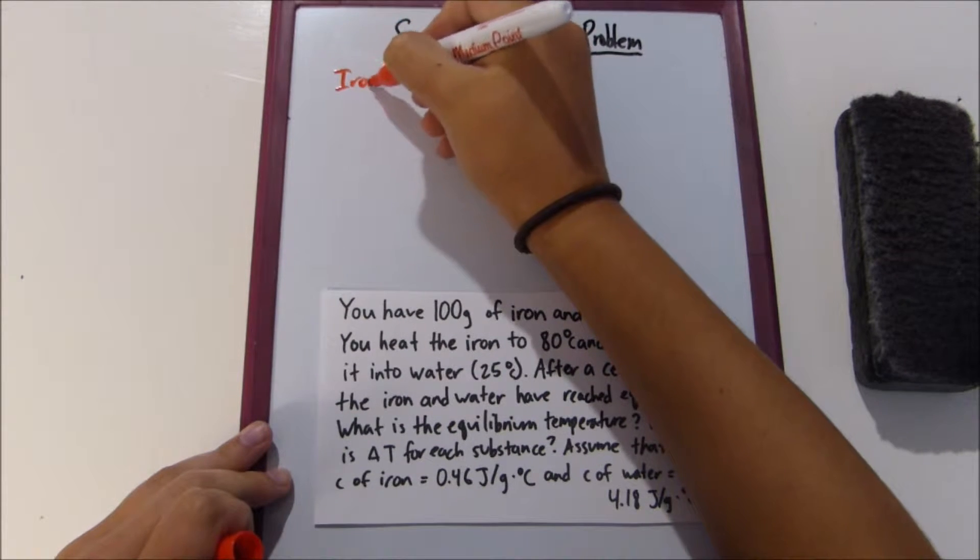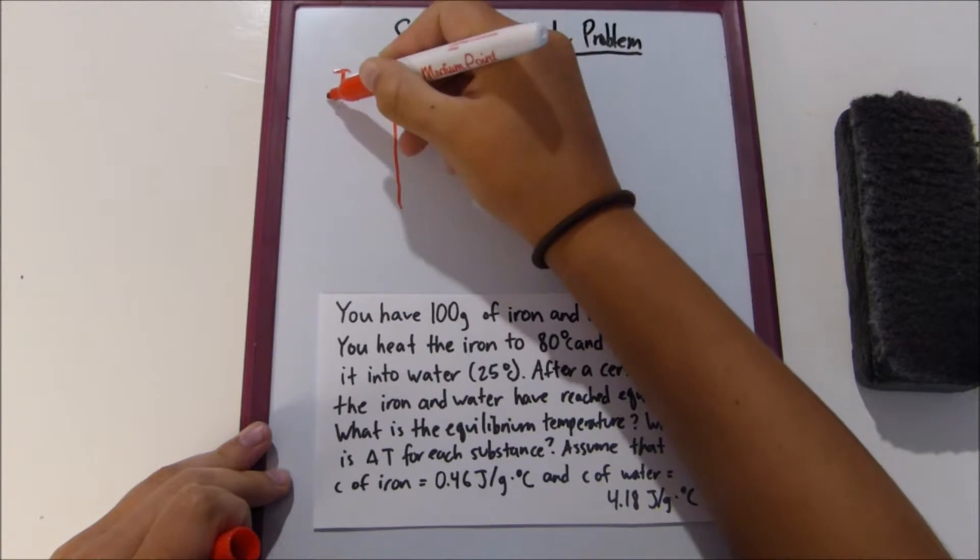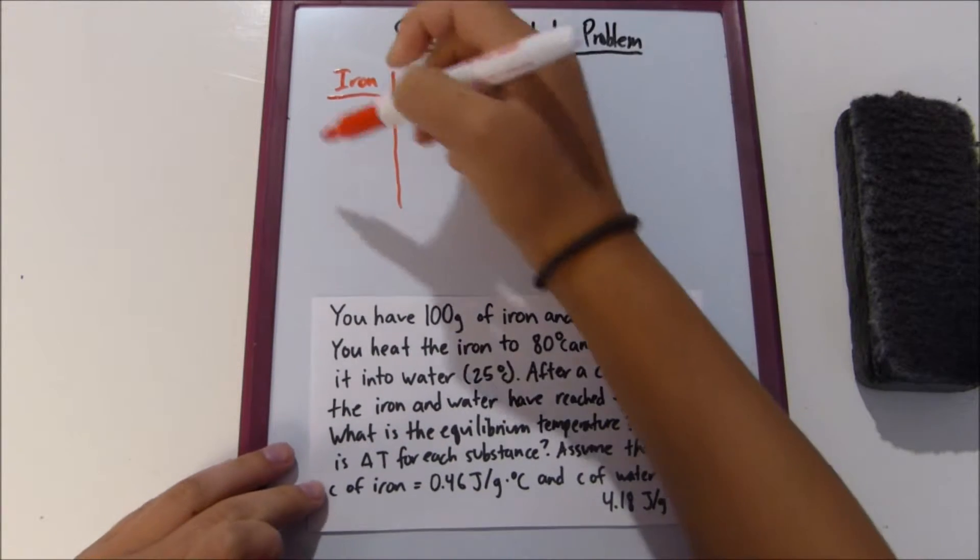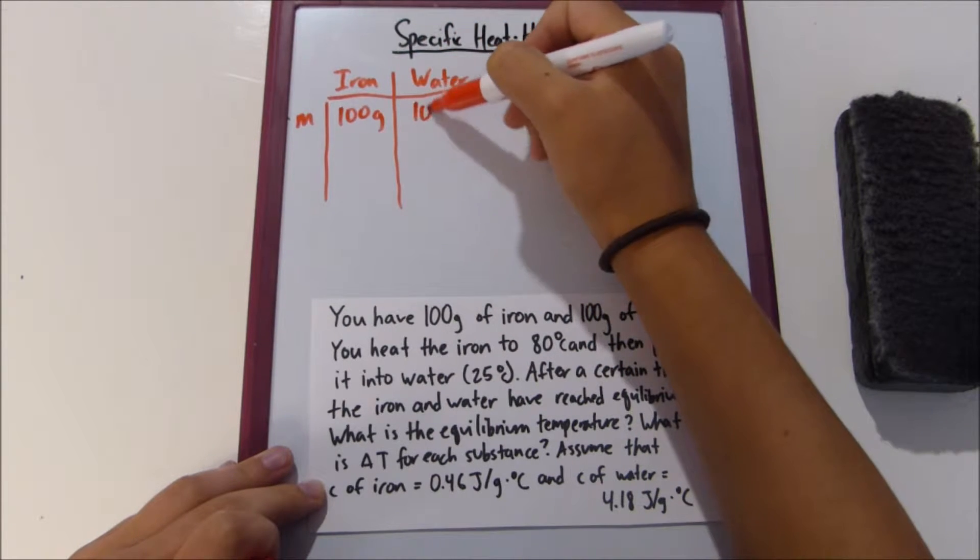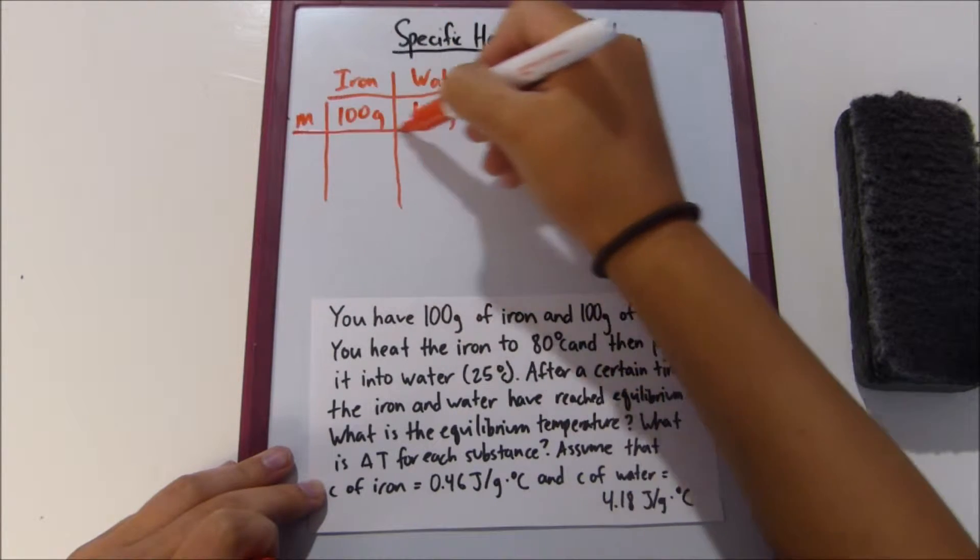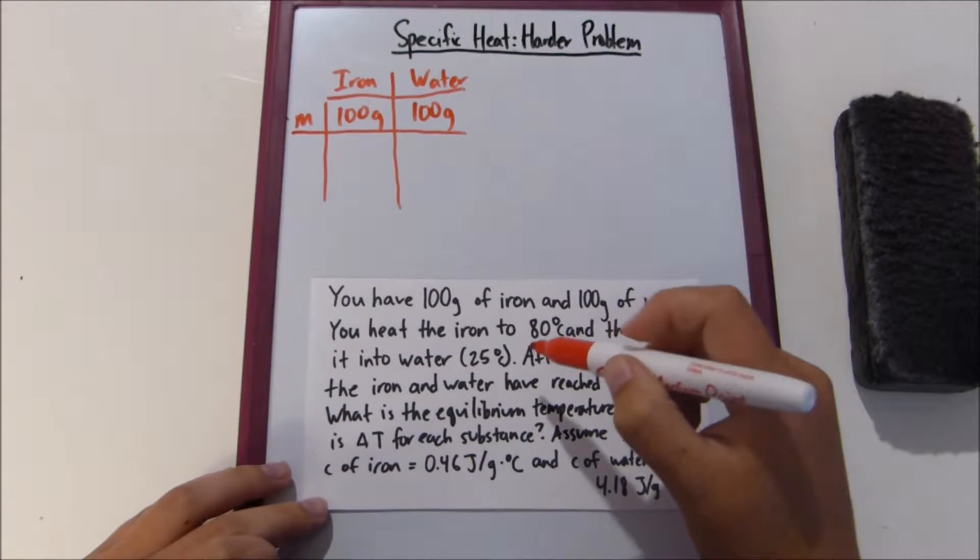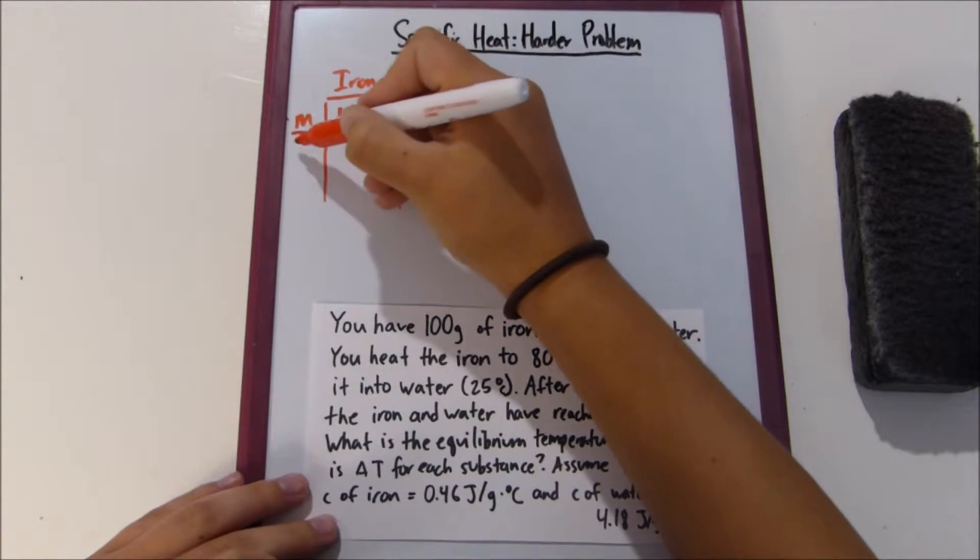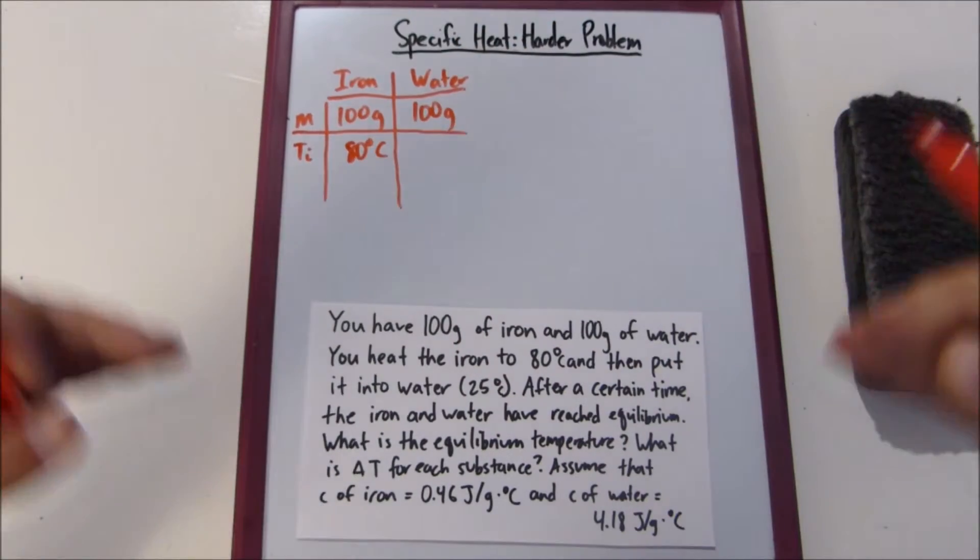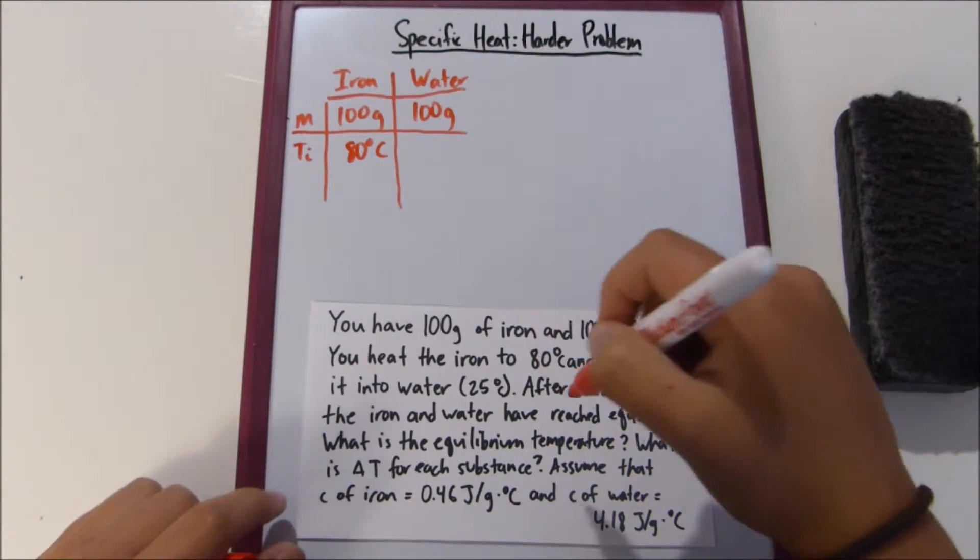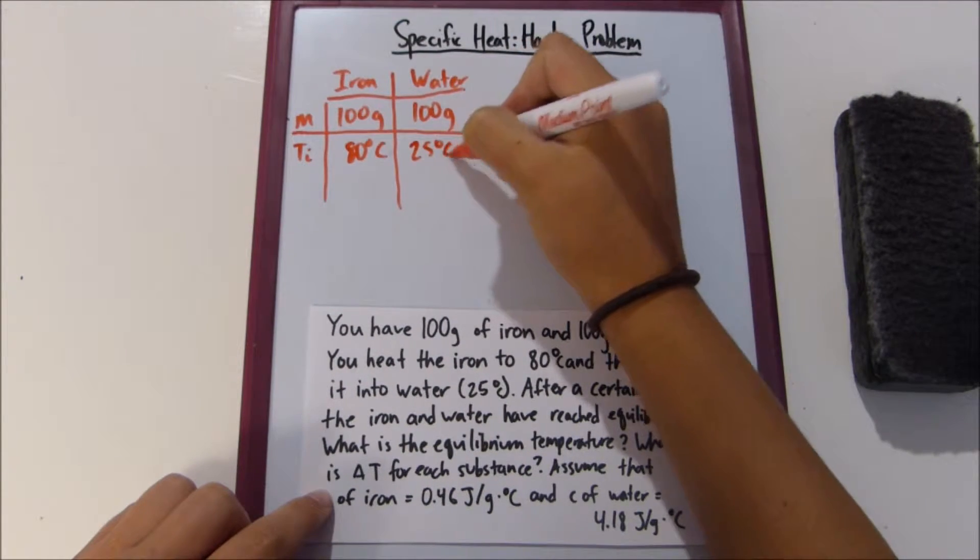So iron and we have water. So we know that the mass is 100 for both, 100 grams. And then we know that the original temperature Ti for the iron is 80 degrees Celsius before it goes into the water. And then we know that before the iron is put into the water, the water's initial temperature is 25 degrees Celsius.